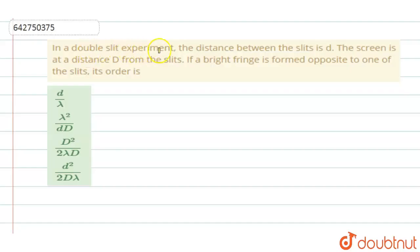In a double slit experiment, the distance between the slits is D. The screen is at a distance D from the slits. If a bright fringe is formed opposite to one of the slits, its order is.